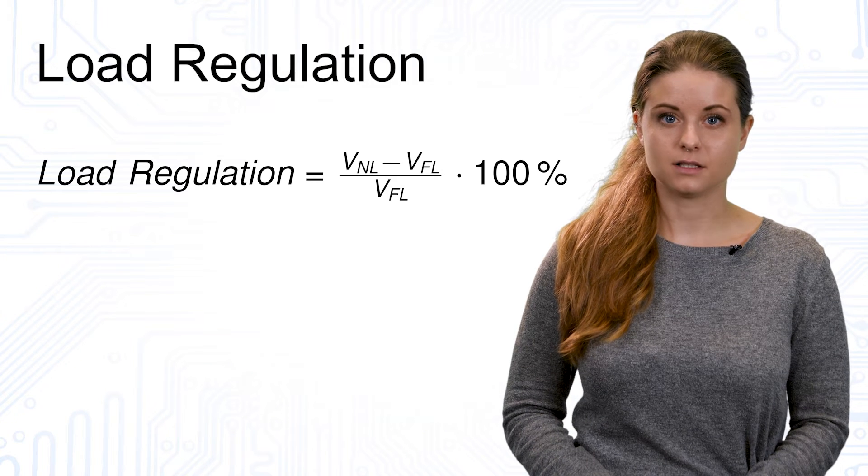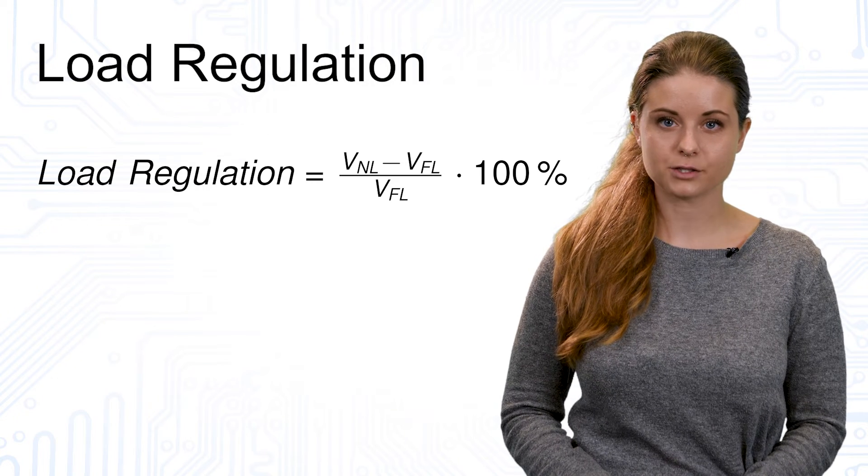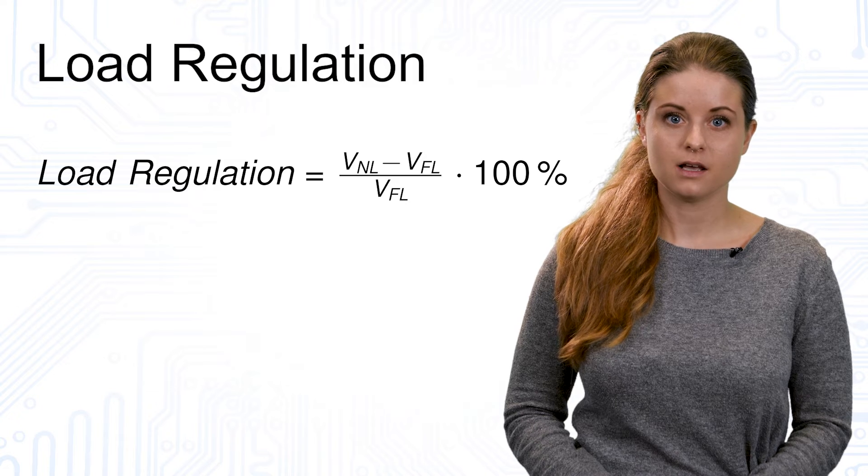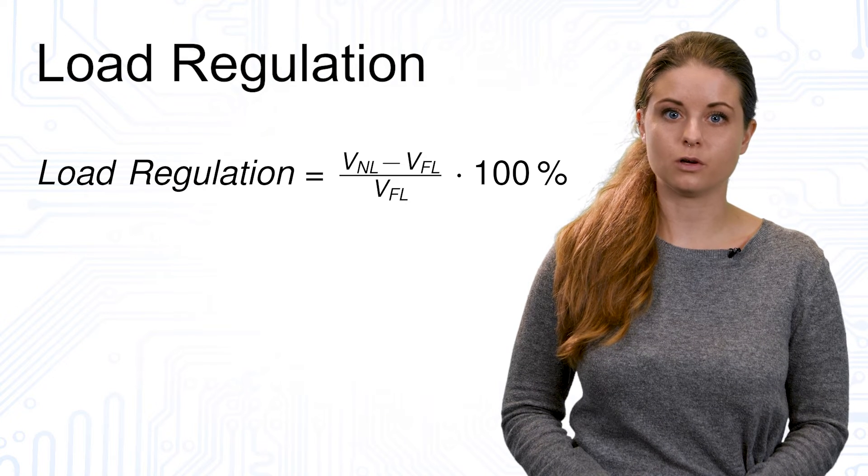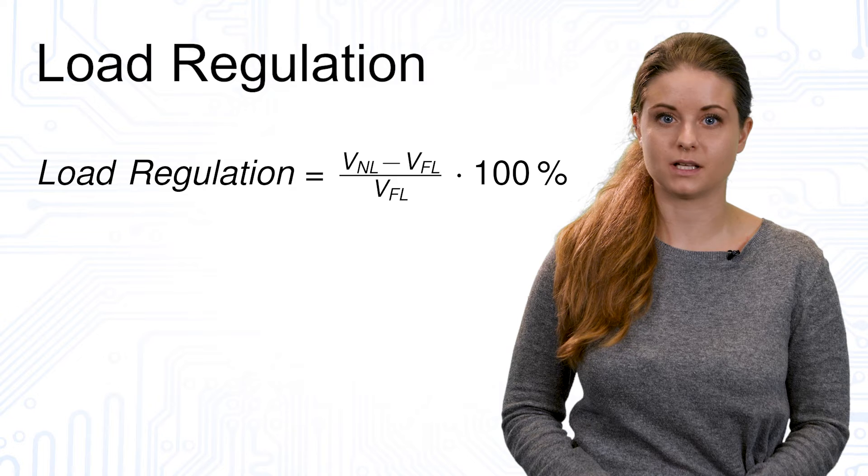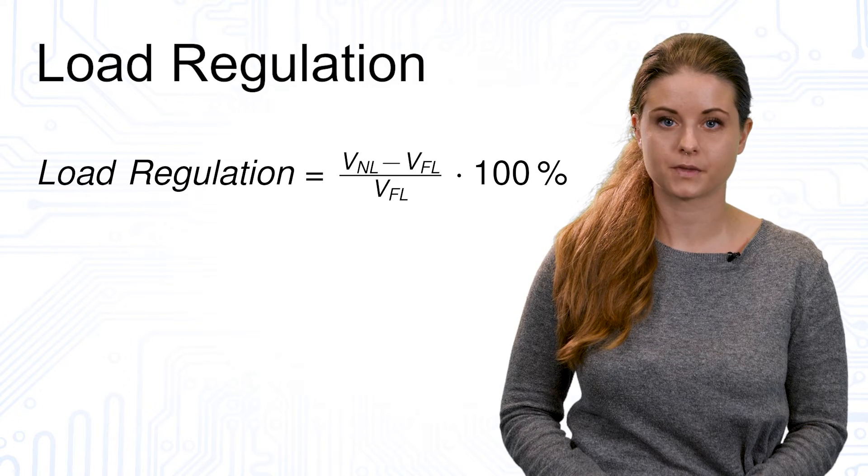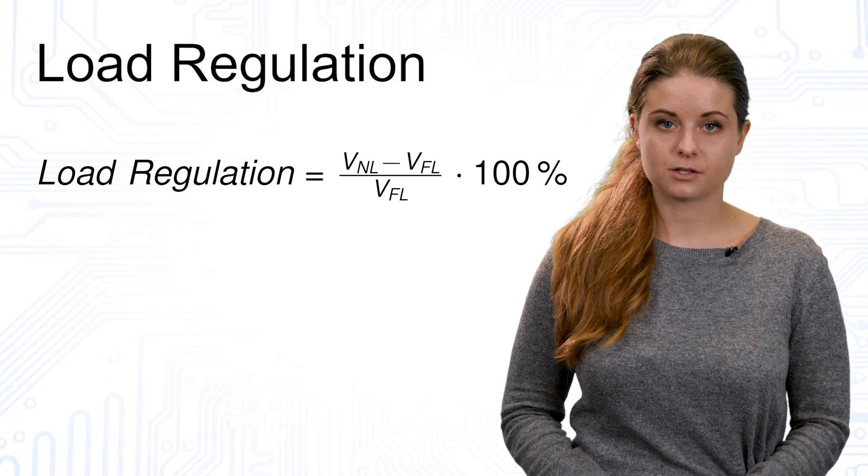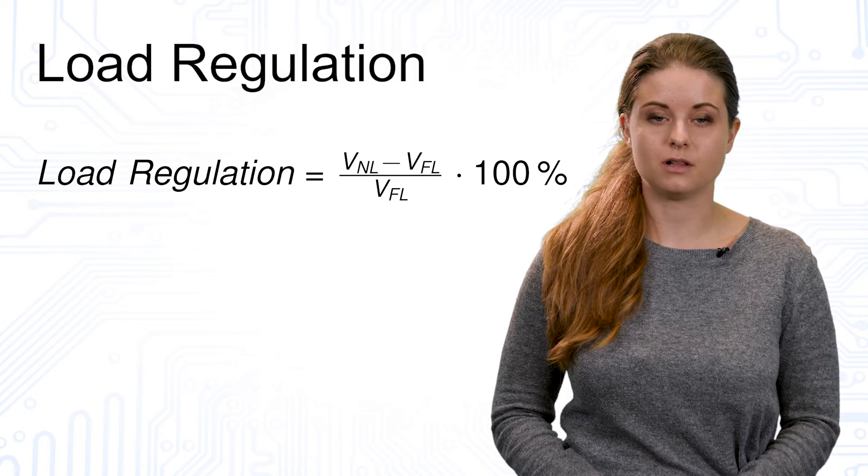V_NL describes the voltage where no load is attached and V_FL describes the voltage where full load is attached, thus the load current is at the maximum that is allowed by datasheet specification. For the load regulation, low values are desirable as well.